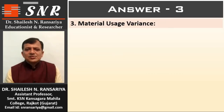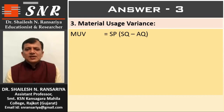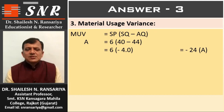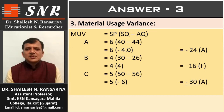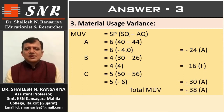Third variance: material usage variance, MUV. The formula is SP × (SQ minus AQ). For material A: SP 6 × (SQ 40 minus 44) = 6 × minus 4 = minus 24, adverse. For material B: 4 × (30 minus 26) = 4 × 4 = 16, favorable. For material C: SP 5 × (SQ 50 minus 56) = 5 × minus 6 = minus 30, adverse. Total material usage variance: minus 38, adverse.